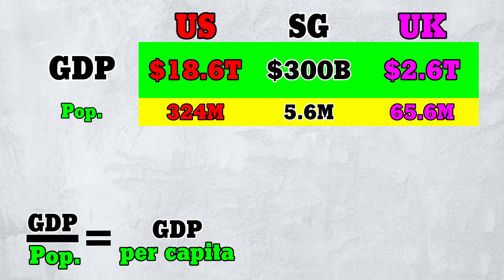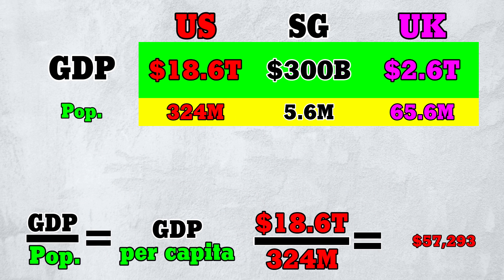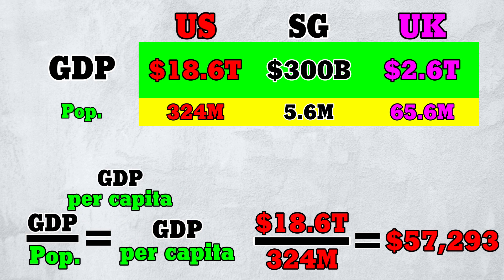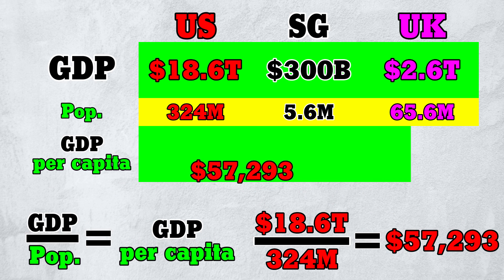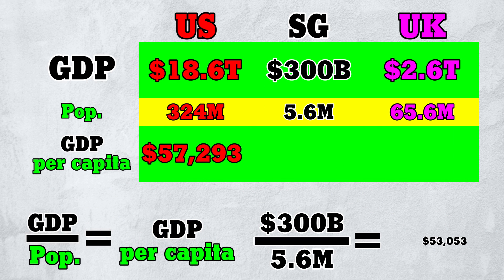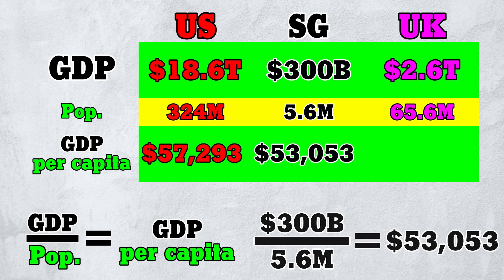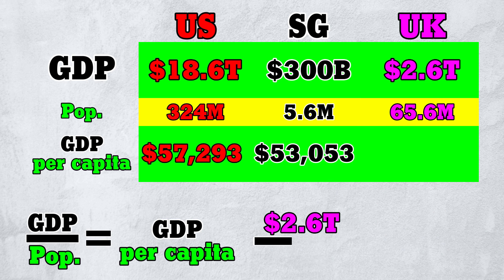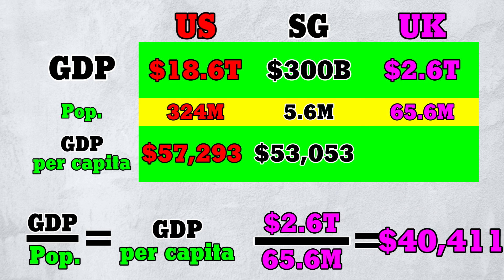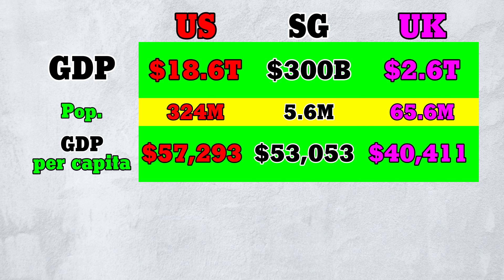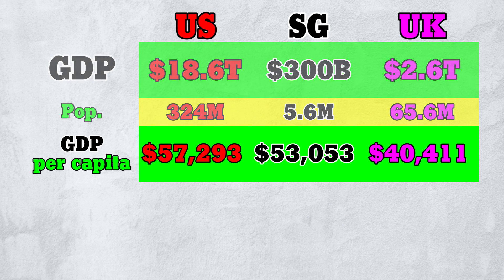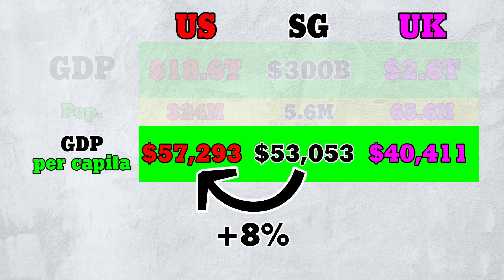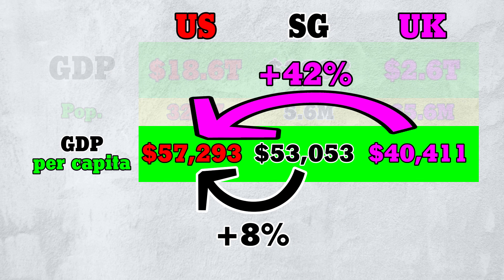For the US, that's 18.6 trillion divided by 324 million, or 57k. For Singapore and the UK, the calculations are similar. US GDP per capita is 8% greater than Singapore and 42% greater than the UK.